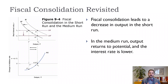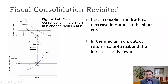A fiscal consolidation shifts our IS curve to the left. We start at point A, we get the fiscal consolidation, we get a shift in our IS curve to the left to IS prime, and we move from A to A prime. One thing to note in this example is that we're not assuming any change in monetary policy — just imagine the central bank is doing nothing. So output falls from Y-natural to Y prime.